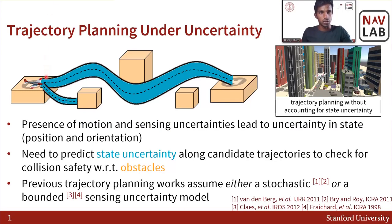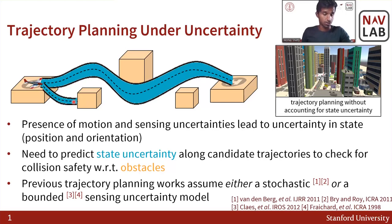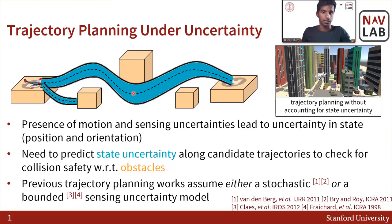This shows the need for predicting state uncertainty along candidate trajectories to ensure collision safety. For example, in this scenario, we predict the state uncertainty along two trajectories. The predicted state uncertainty along this trajectory intersects with the obstacles, which determines this trajectory to be unsafe. On the other hand, the predicted state uncertainty along this trajectory does not intersect with any of the neighboring obstacles, determining this trajectory to be safe for the UAS.